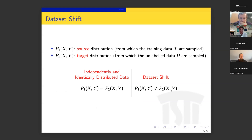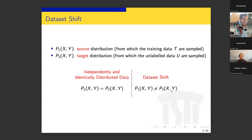Let me introduce dataset shift in some detail. The notion of dataset shift starts from the joint distribution of our data, indicated as P(X,Y), where X are the covariates and Y are the labels. Dataset shift is the situation in which we have two distributions: P1(X,Y), the source distribution from which training data comes, and P2(X,Y), the target distribution from which unlabeled data comes. Dataset shift is when P1 and P2 are different, whereas the usual IID situation assumes they are the same.